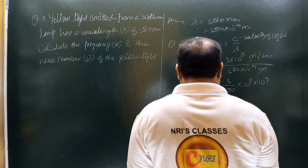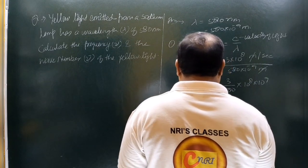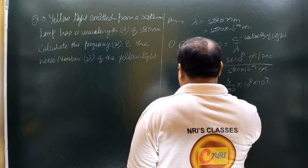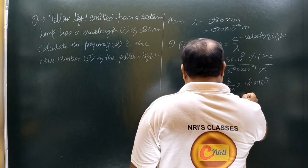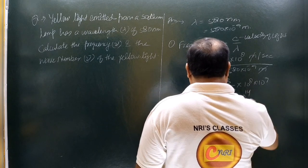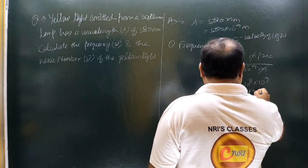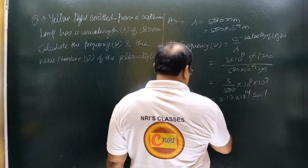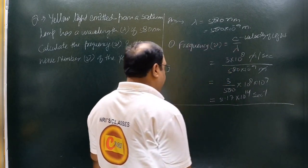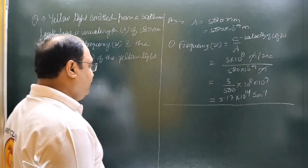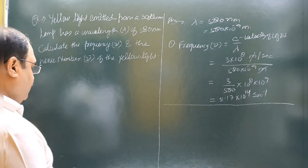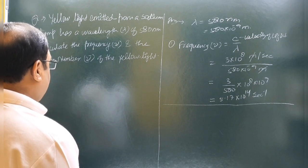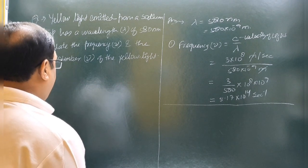तो इसको solve करने के बाद यह value जो आती है, वह आती है 5.17 into 10 to power 14 second inverse। अब उसके बाद हम बात करते हैं wave number की।